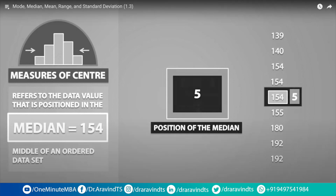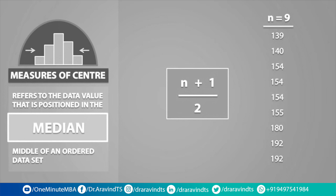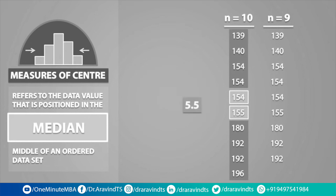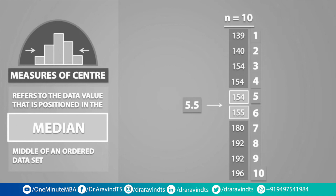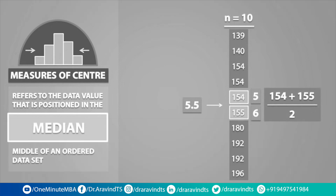We always use the formula n plus 1 divided by 2 to find the position of the median. When we have an odd amount of data values, the median will always be apparent. However, if n is an even number, we see that we have 2 middle data points, and if we use the formula, we end up with 5.5. Since there isn't a value in this position, we take the arithmetic average of the two values beside this position — so we would have 154 plus 155 divided by 2, and we get an answer of 154.5, which is the median for this data set.